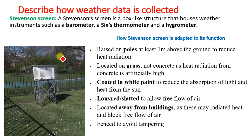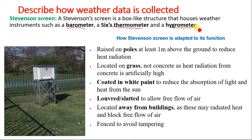Now, how to describe how weather data are collected. The first thing is the Stevenson Screen, which will come up a lot in your exams. A diagram of a Stevenson Screen can be given to you and you'll be asked to describe why it is kept there, what is inside, why it is placed there, and what its importance is. A Stevenson Screen is a box-like structure that houses weather instruments. Inside you have a barometer, a Six's thermometer, and also a hygrometer.